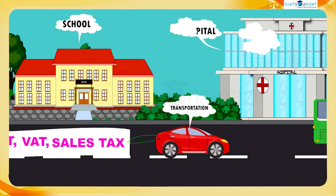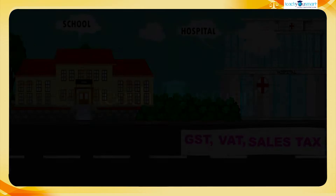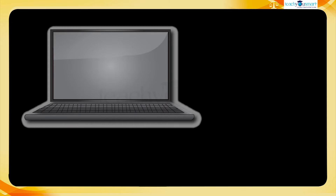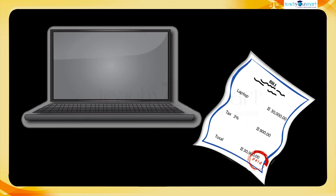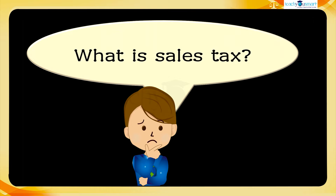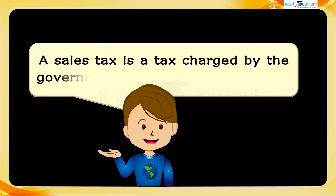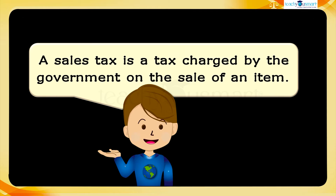Some examples are sales tax, VAT, and GST. Now let's see how this works. Whenever we buy a laptop, we are charged more than the actual price. This is because the shop has charged tax on the laptop. If we look closely at our bill, we can see sales tax added to the item. So, what is sales tax?